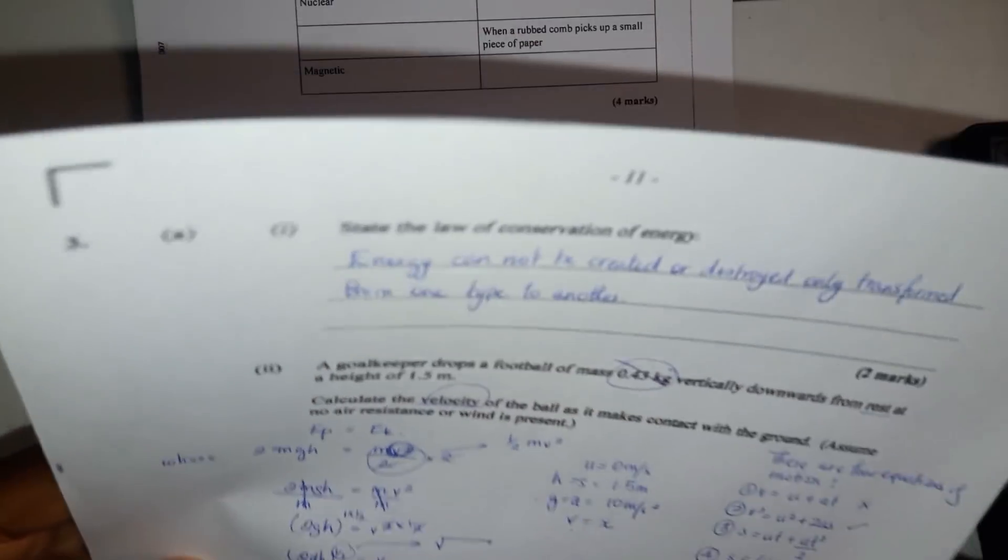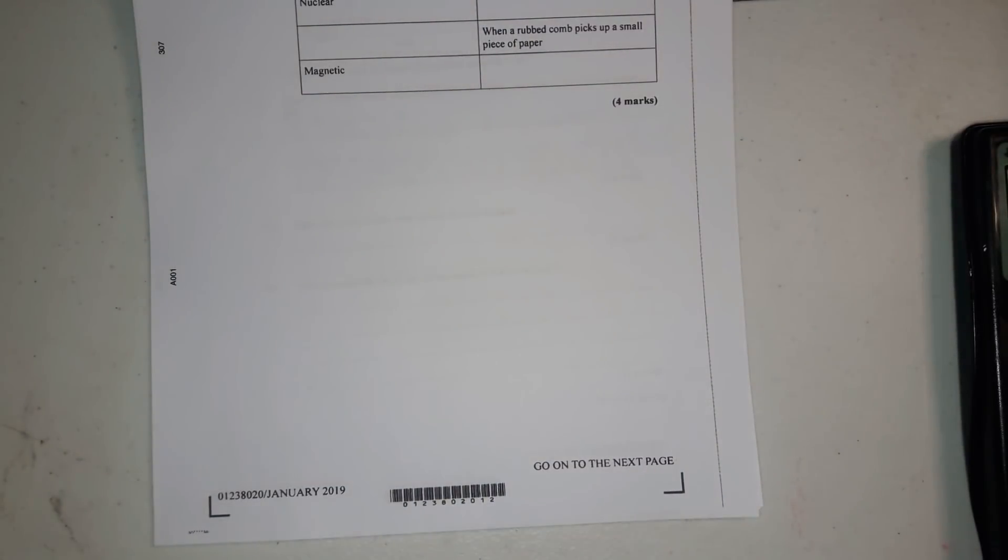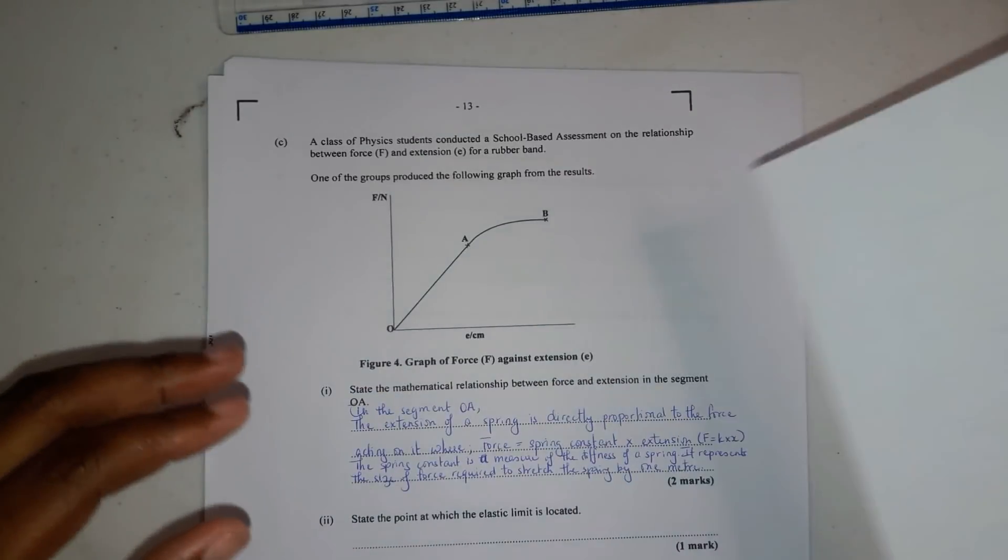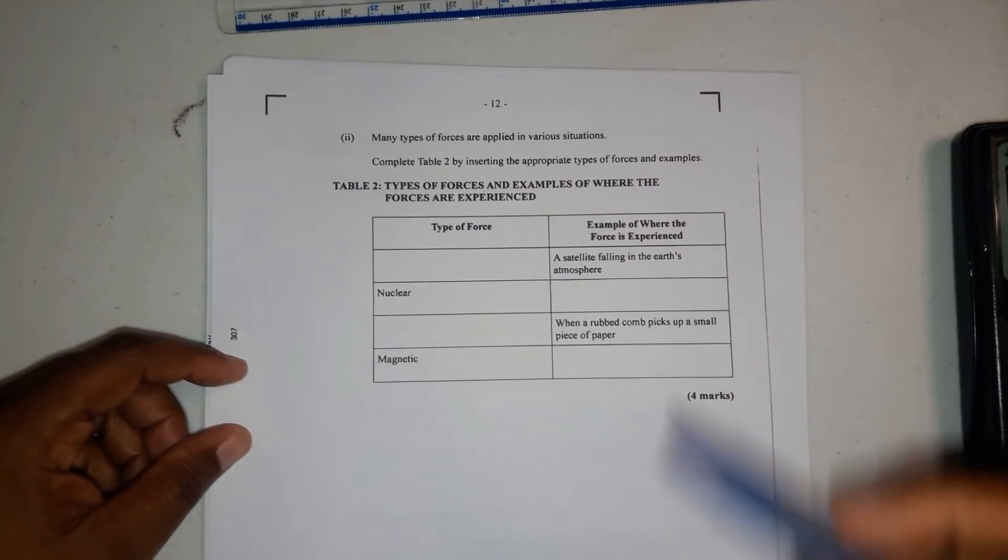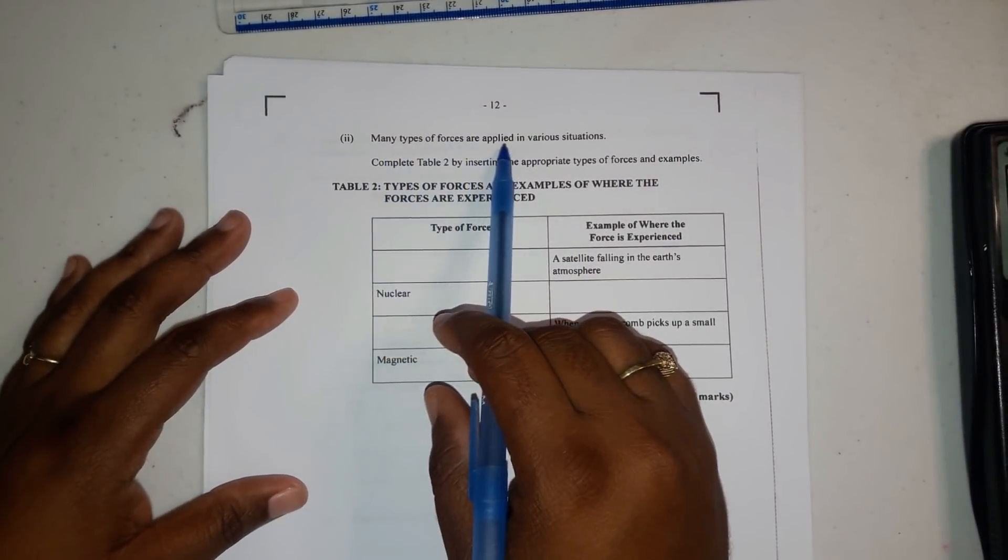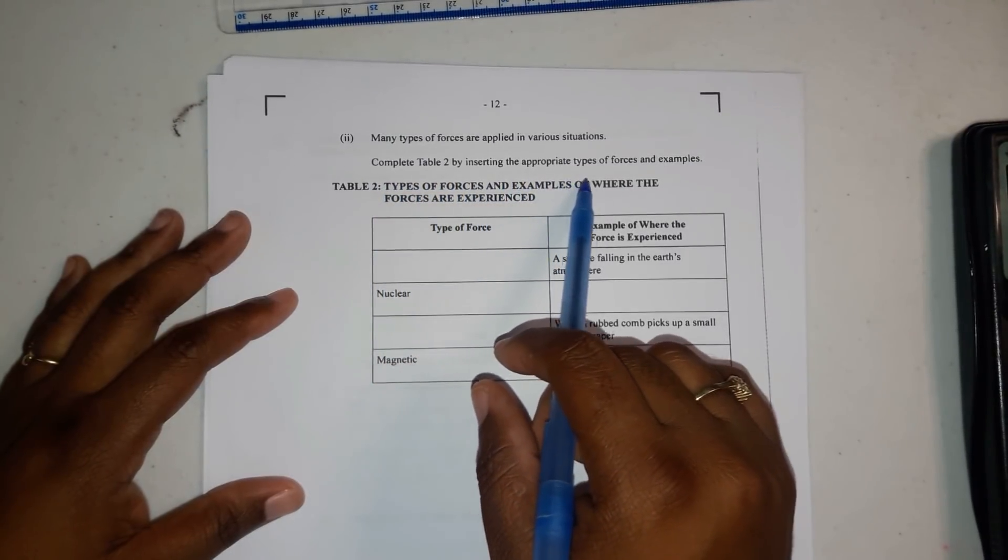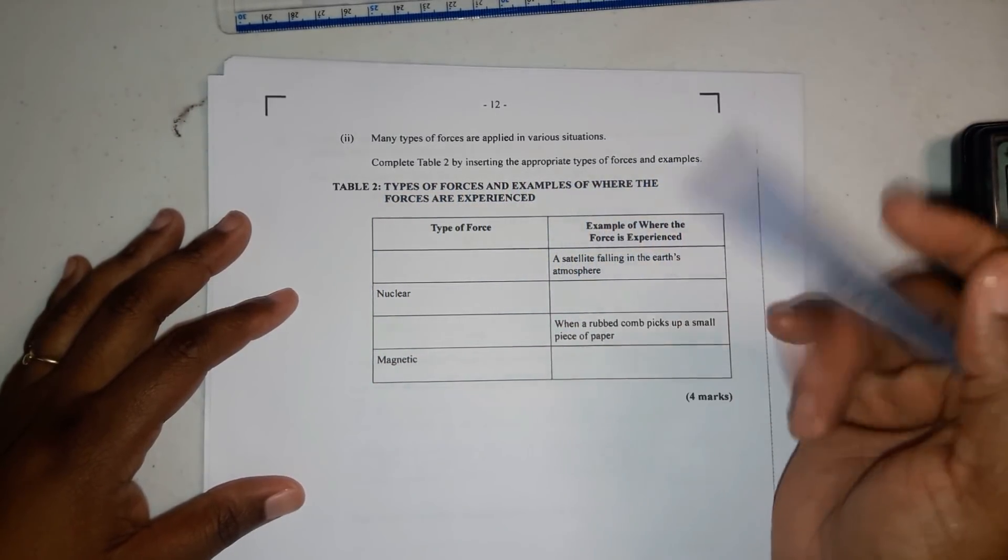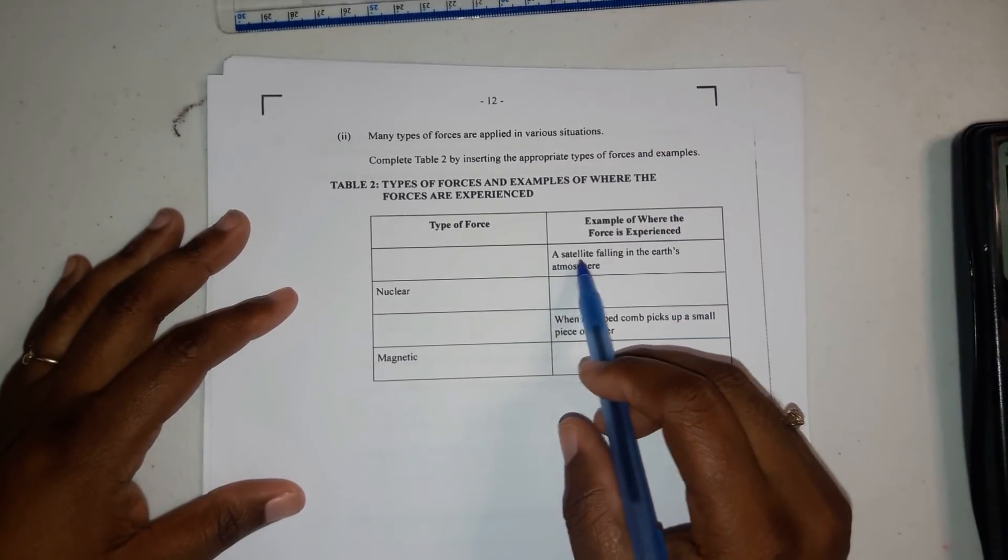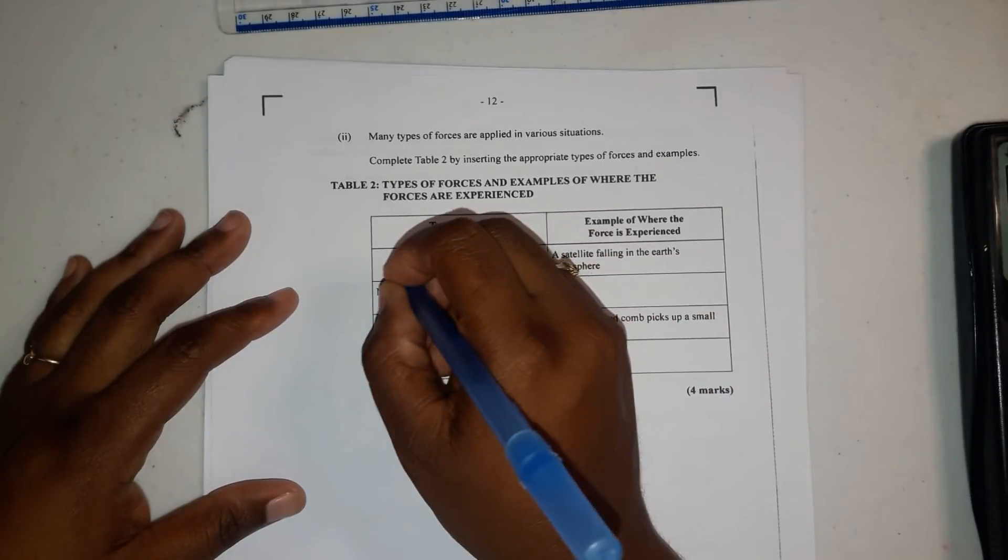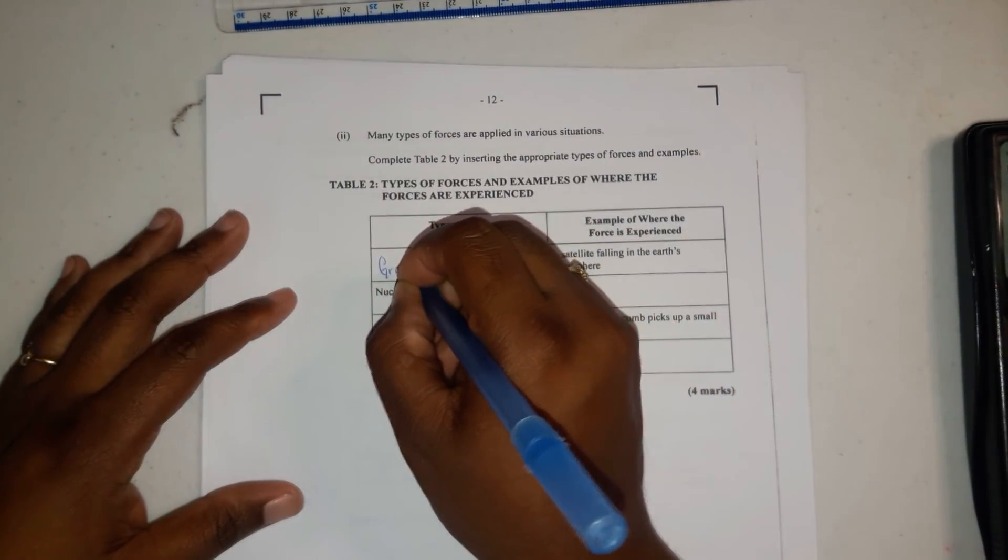So now we are on question 2, part 2. It says many types of forces are applied in various situations. Complete table 2 inserting the appropriate types of forces and examples. If something is falling in the Earth's atmosphere, it's due to gravity. So that force will be due to gravity.